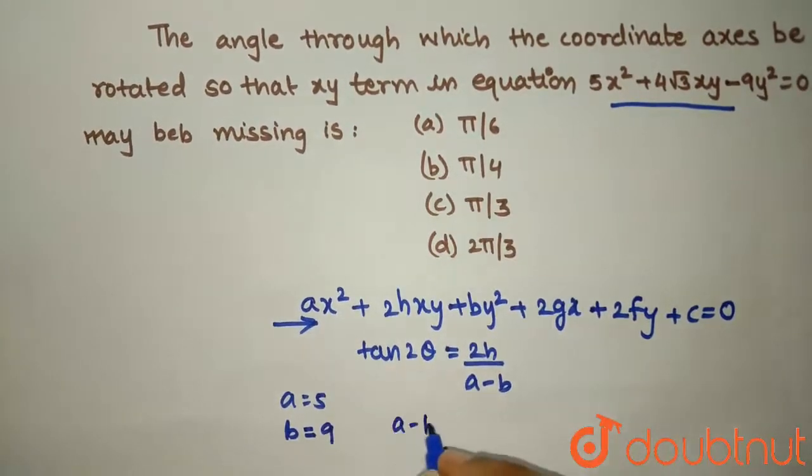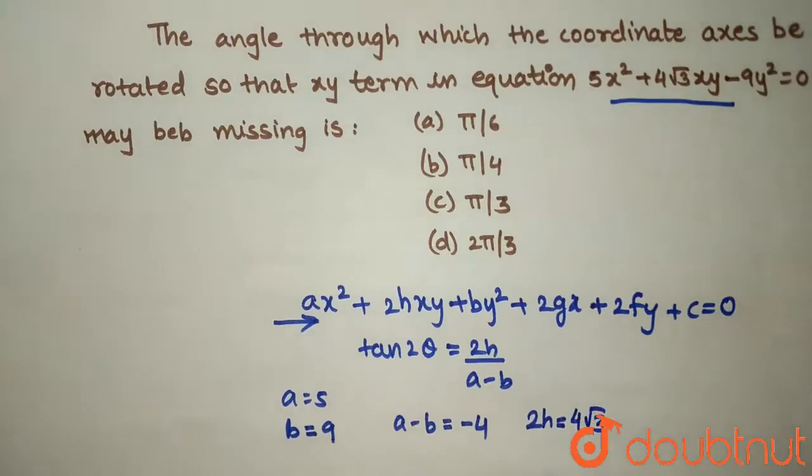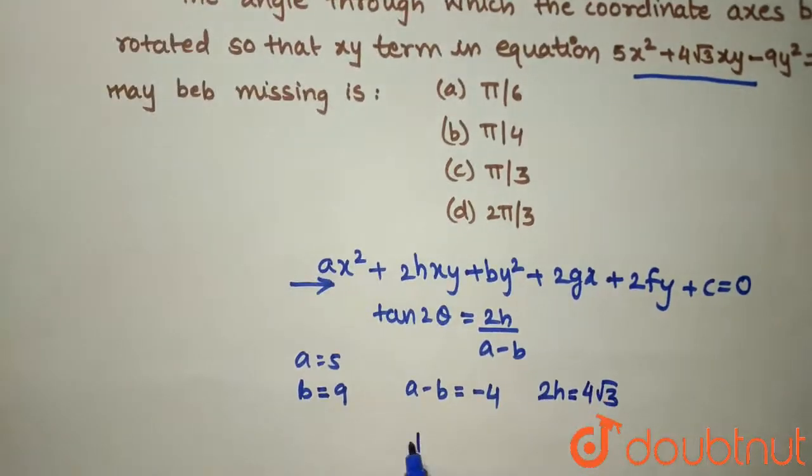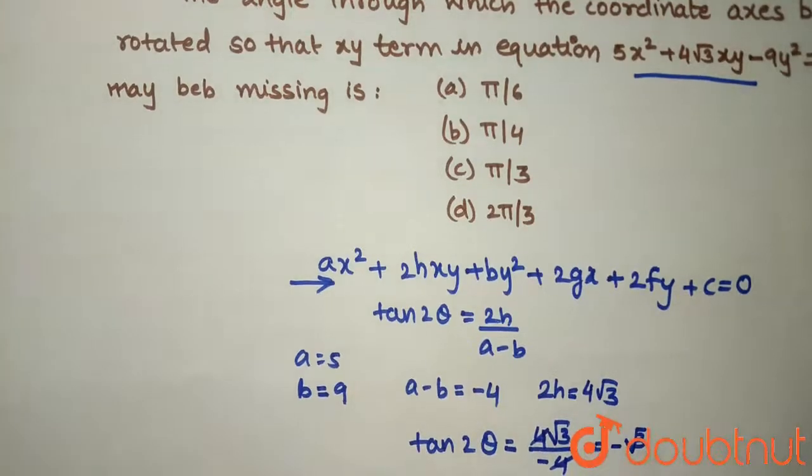So a minus b will become minus 4, whereas your 2h is given as 4√3. So from here your tan 2θ will become 2h, that is 4√3, divided by a minus b, that is minus 4, which will give minus √3.